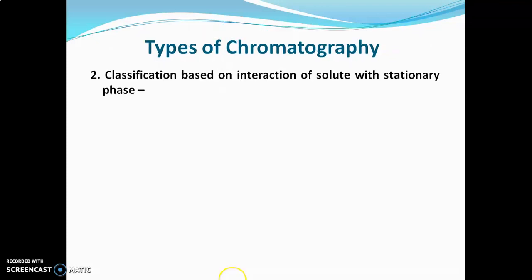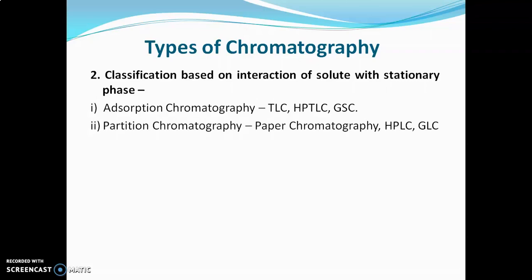The second classification is based on the interaction of solute molecules with the stationary phase. First class is adsorption chromatography, where solute molecules adsorb onto the stationary phase and separation occurs due to differences in adsorption affinity; examples include TLC, HPTLC, and GSC. Second class is partition chromatography, where the solute molecule partitions between two liquid phases — stationary liquid and mobile liquid — and separation occurs due to differences in partition coefficient; examples include paper chromatography, HPLC, and GLC.